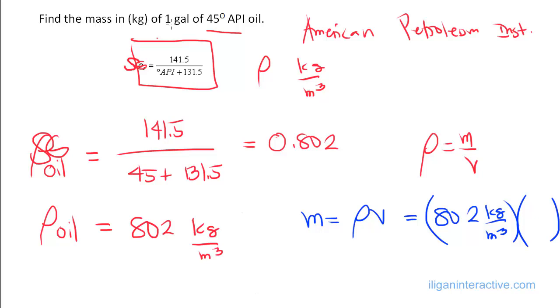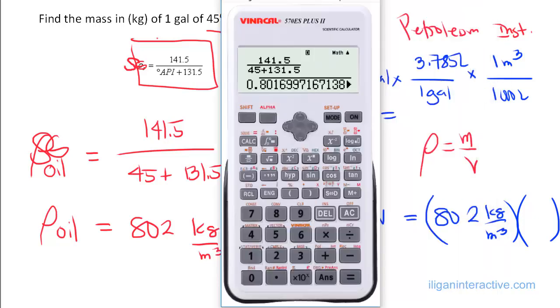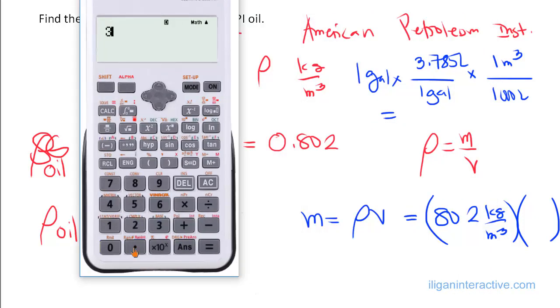We are given 1 gallon—convert that to m³. How do we do that? 1 gallon is 3.785 liters, and 1,000 liters is 1 m³. So basically, 1 gallon is equivalent to 3.785 divided by 1,000.